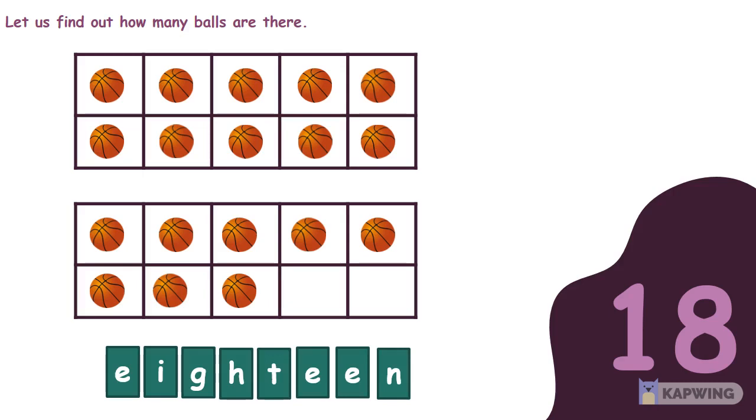Now, how many balls should we add to make the number 19? That's correct, one more ball. You can show 19 as a number and you can also show 19 as a word. The word 19 is spelled as N-I-N-E-T-E-E-N. 10 ones and 9 ones is 19.